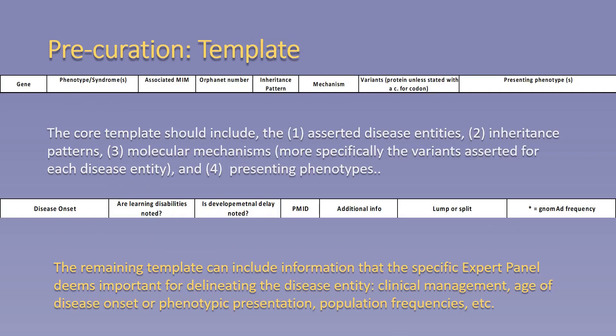The lumping and splitting working group has developed a pre-curation template. The core template should include the asserted disease entities or phenotypes, inheritance pattern, molecular mechanism—more specifically including the variants associated with each disease entity—and the presenting phenotypes. It is also helpful to include the associated MIM phenotype numbers for the disease entities or phenotypes asserted for the gene of interest, as you would find in OMIM. These can give an indication of whether two or more phenotypes are considered a disease spectrum, as they will have an identical MIM phenotype number. The remaining template can include information pertinent to the specific gene curation expert panel.